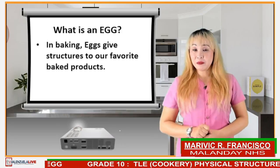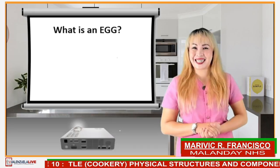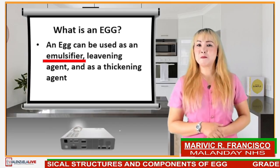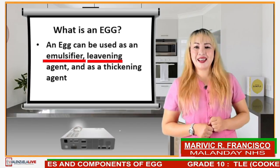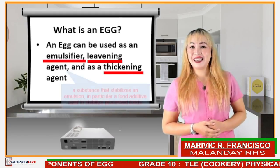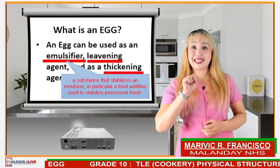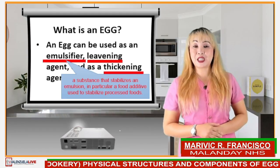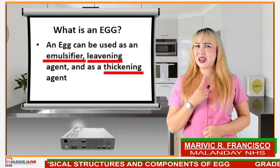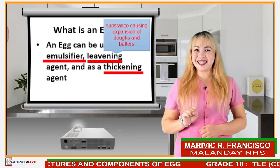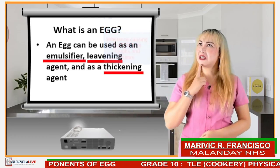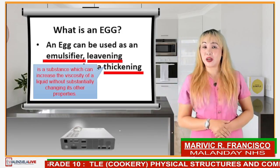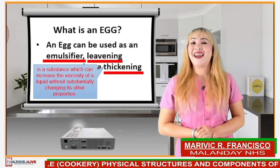In baking, eggs give structure to our favorite baked products. An egg can be used as an emulsifier, leavening agent, and as a thickening agent. Emulsifier means it is a substance that stabilizes an emulsion, in particular a food additive used to stabilize processed foods. Leavening agent is a substance causing expansion of doughs and batters. Thickening agent is a substance which can increase the viscosity of a liquid without substantially changing its other properties.